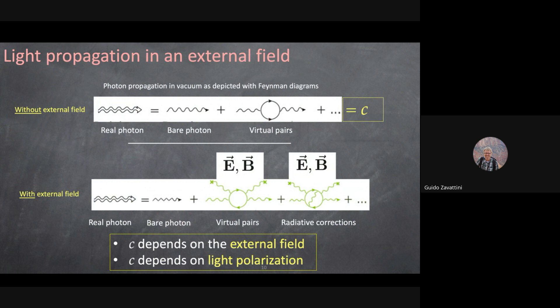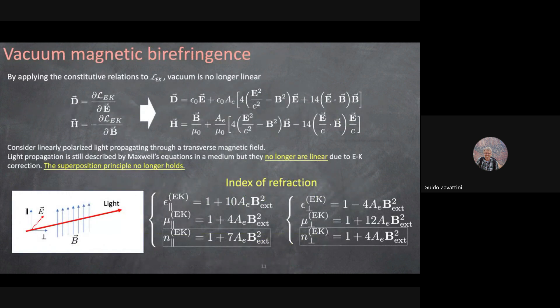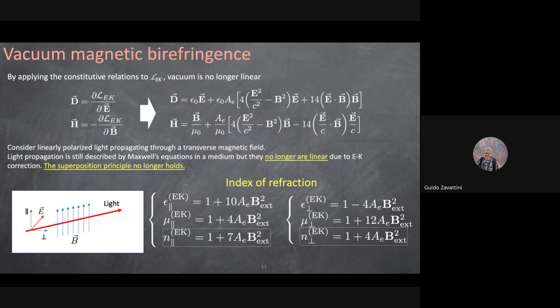From the Euler-Kockel Lagrangian, when you subtract D − ε₀E you find a non-zero polarization vector — vacuum can be polarized. Furthermore, D now depends not only on the external electric field but also on the external magnetic field. The medium is no longer linear; it's completely nonlinear. The effect is very small, but vacuum becomes a genuinely nonlinear medium.